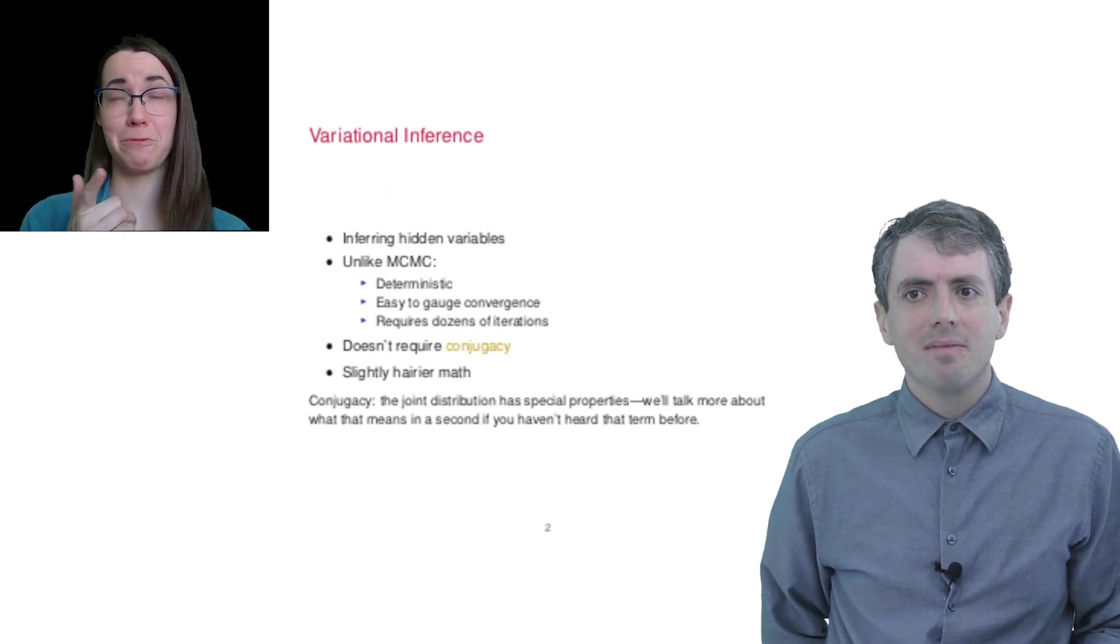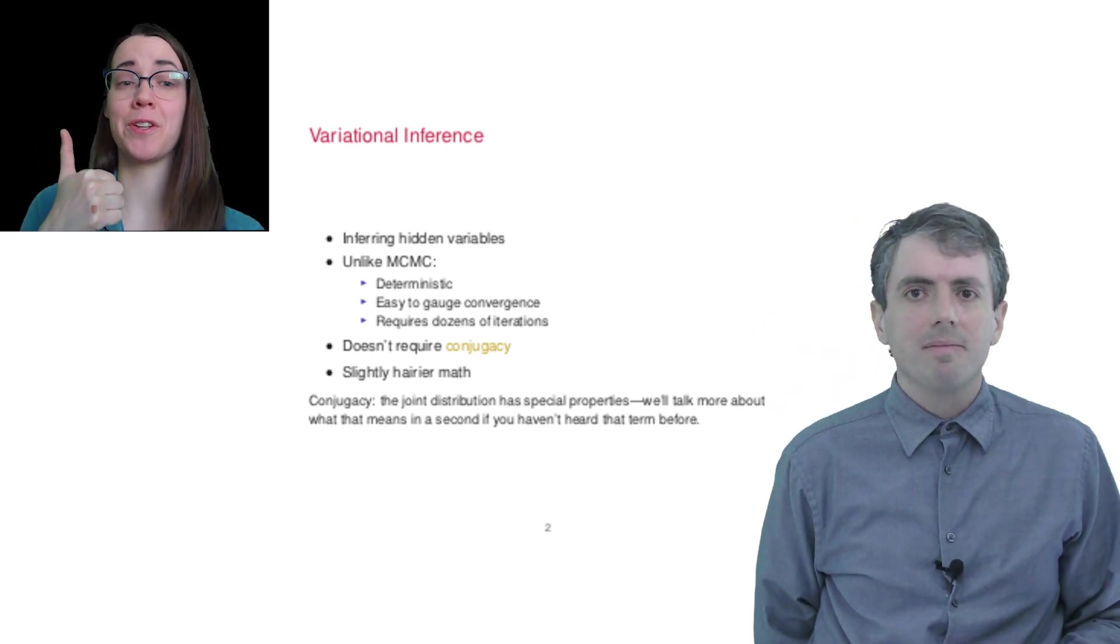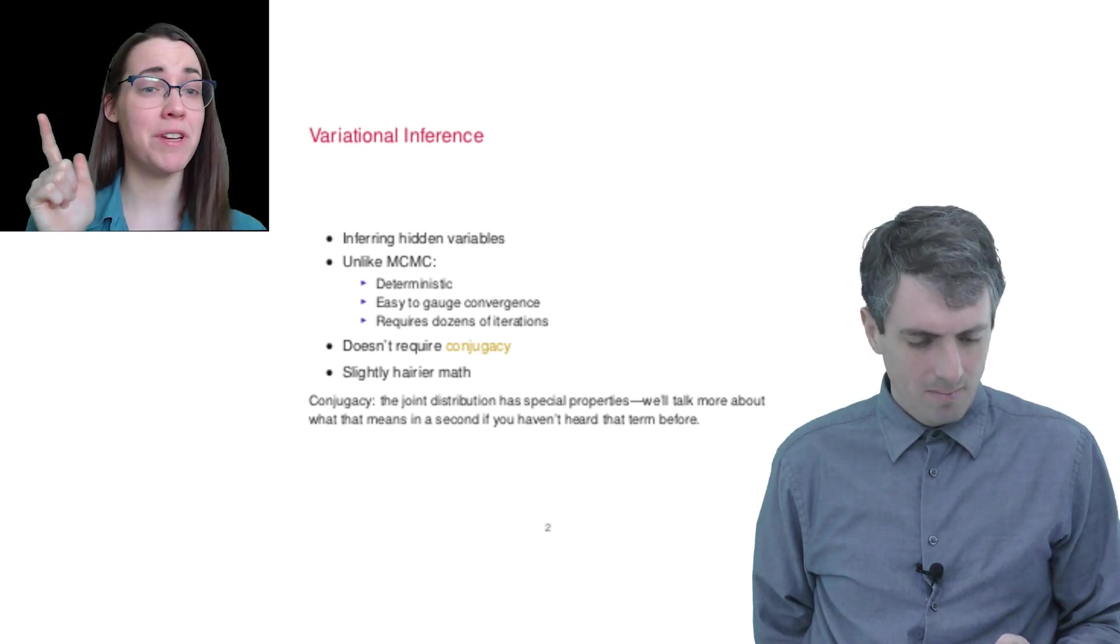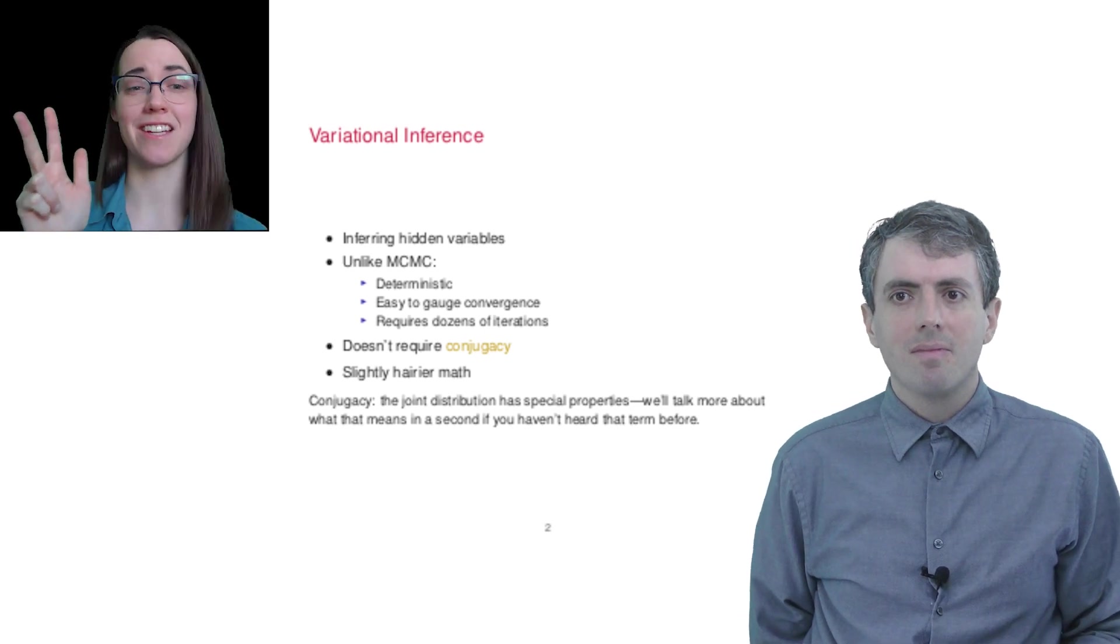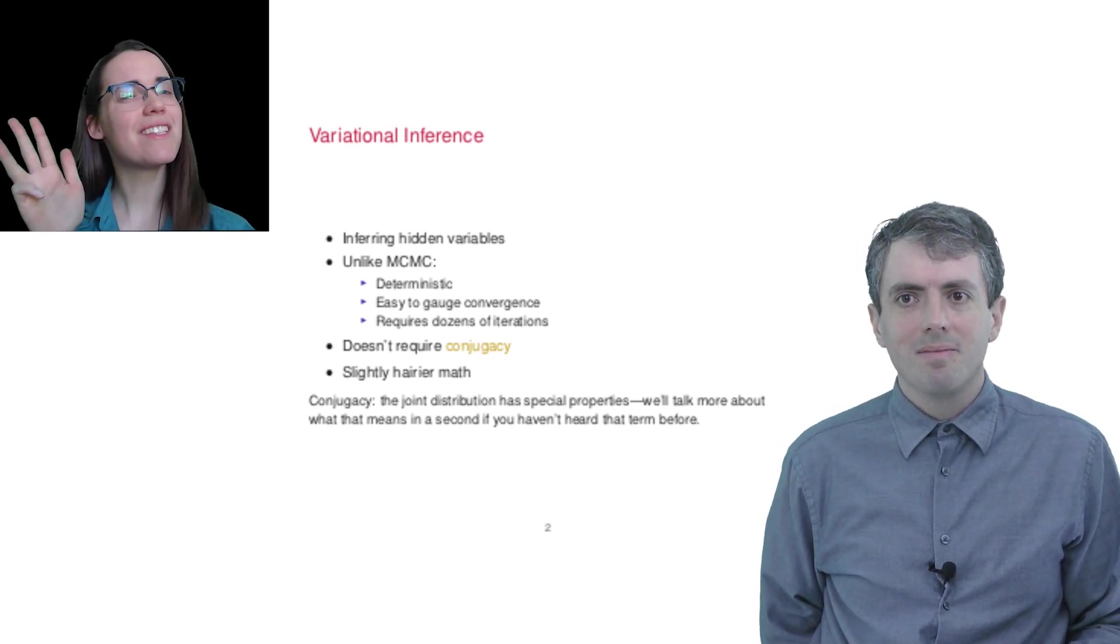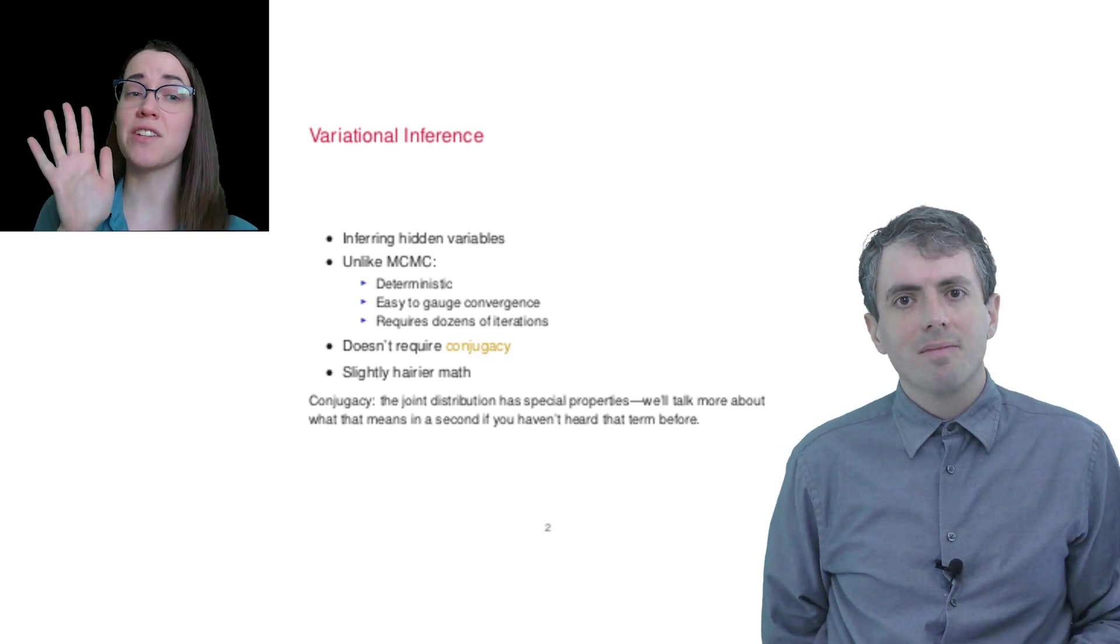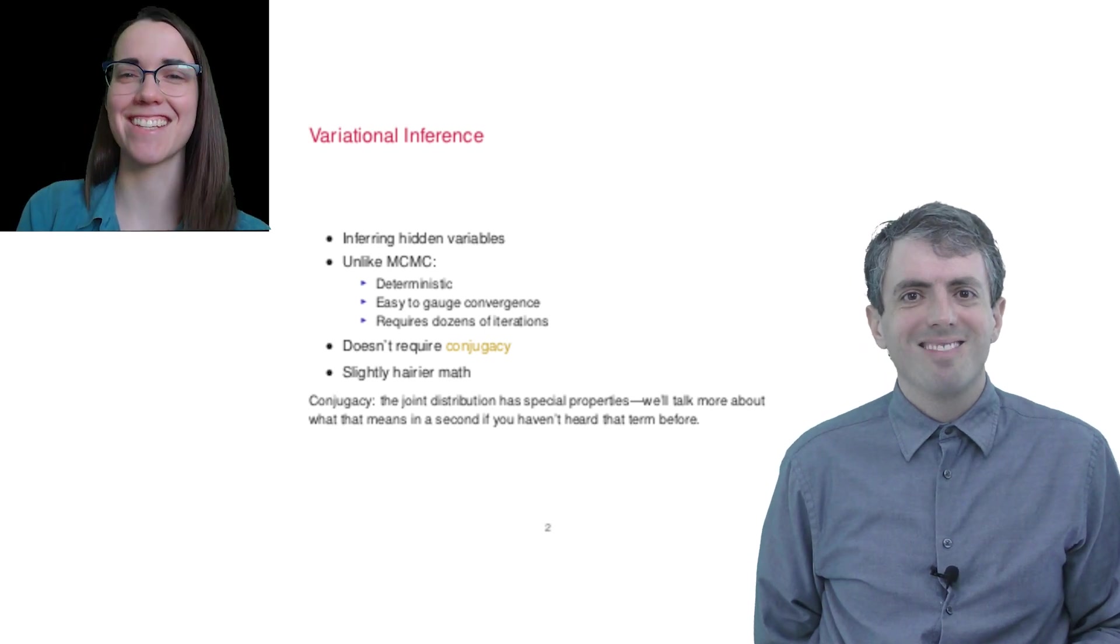Lots of reasons. I'll actually give you a quick five. VI models, variational inference models, are deterministic, so they're easy to debug. It's easy to tell when you've converged. They require far fewer iterations to converge. They make more sense for an optimization framework like PyTorch. And they don't require conjugate distributions, which are a more complicated thing we can discuss later.